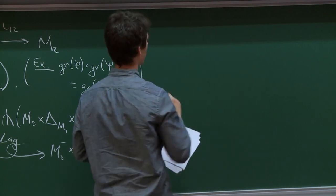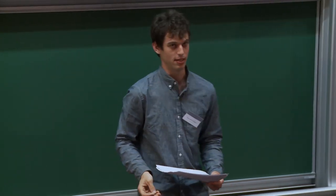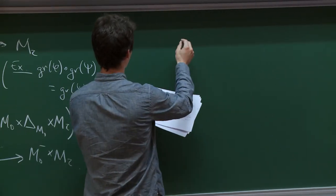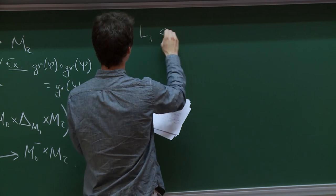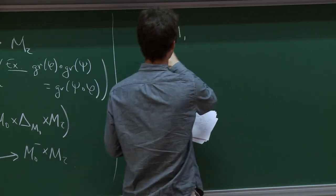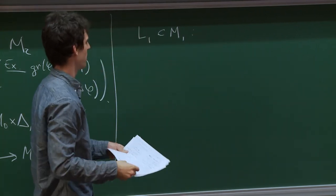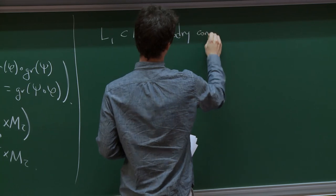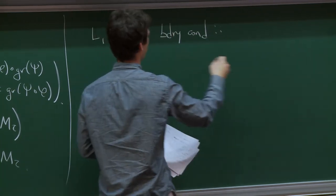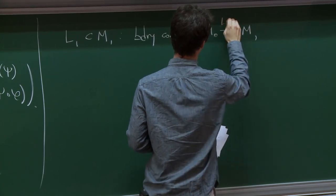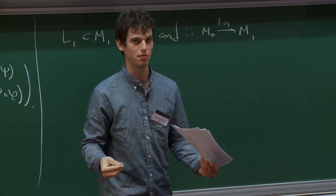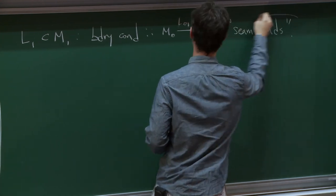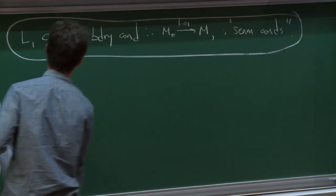I mentioned pseudo-holomorphic gadgets in the introduction; now I'll tell you what they are — they're called pseudo-holomorphic quilts. The way you form these is to understand what role Lagrangian correspondences should play when they interact with holomorphic curves. Just as a Lagrangian defines a natural boundary condition for pseudo-holomorphic curves, the theory of quilts tells us that Lagrangian correspondences define seam conditions.